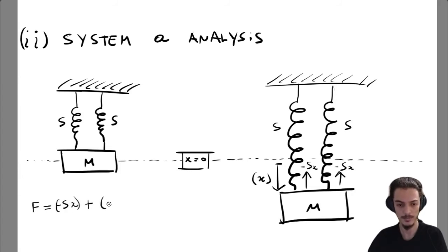So if we write the total force acting on the mass, it will be minus s times x plus minus s times x. There are two forces acting on the mass, each one related to a spring.